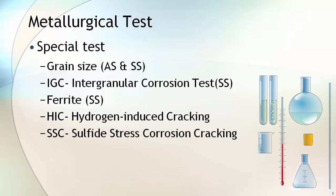Special tests are also carried out on fittings to confirm their ability to withstand a corrosive environment. These tests are IGC, ferrite, HIC, and SSC. Grain size is also checked for alloy steel and stainless steel fittings. A proper grain size will confirm the effectiveness of heat treatment and confirm the microstructure requirement of the material.